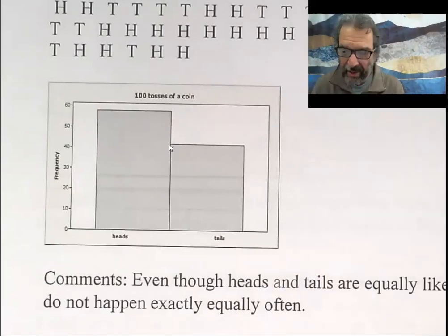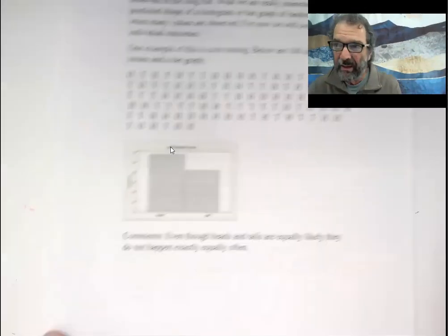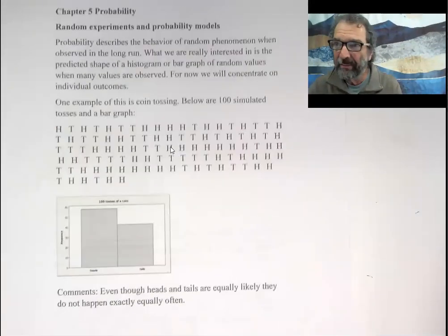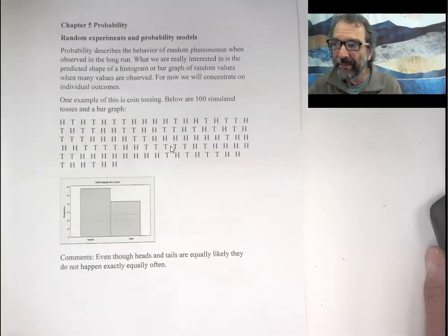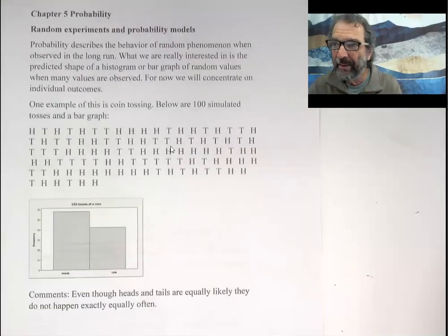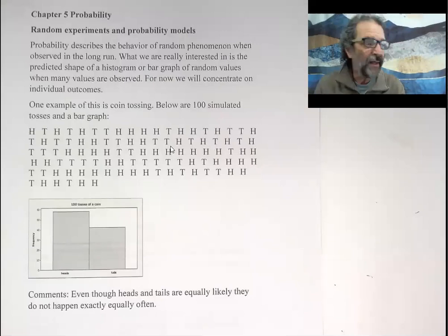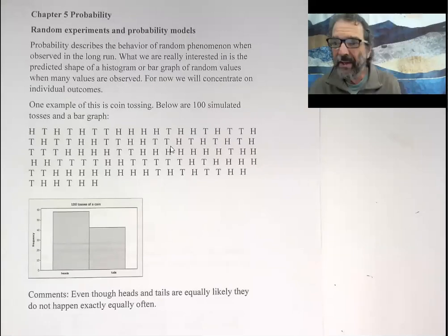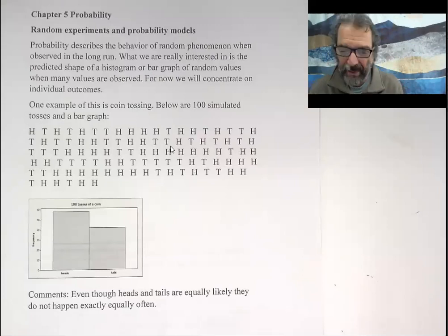You could say, well, I thought it'd be closer to 50-50, but you'd be sort of wrong. There's ways of predicting about how far away from 50-50 you might expect. You might expect it to see, but that's beyond the scope of our class. Even though something is supposed to happen about half the time, it doesn't happen exactly half the time, but does get closer and closer to half and half as you make more and more observations.